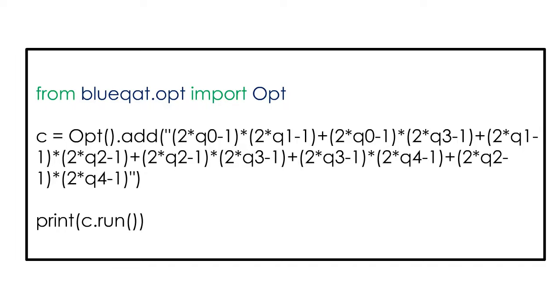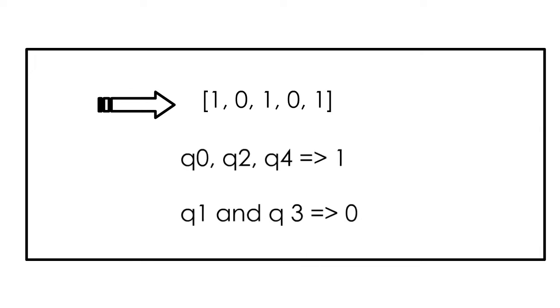And for that we will be using the following code. The answer will be. Means that, now we have Q0, Q2, Q4 as value 1 and others as 0 for divided groups.